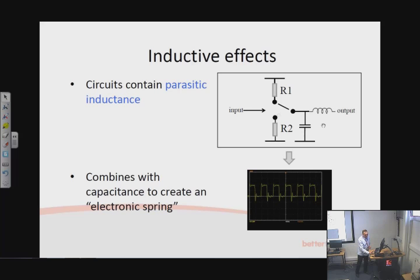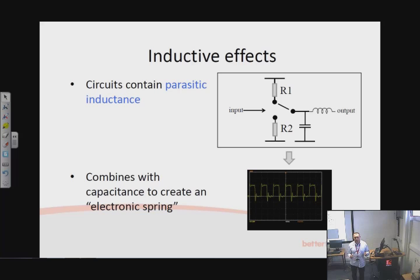We also have parasitic inductances, which cause real trouble. The circuit now behaves like an electronic spring: the capacitance causes a phase shift in one direction, the inductance causes a phase shift in another, and the two combine to create a sine wave — an oscillation. When we switch very fast, we get ringing on the signal edge.